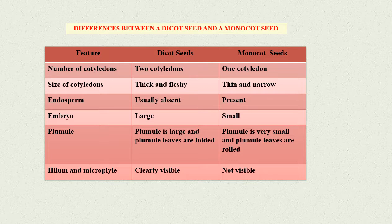Endosperm: In dicot seeds, it is usually absent. In monocot seeds, it is present.